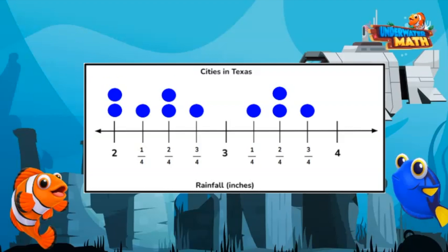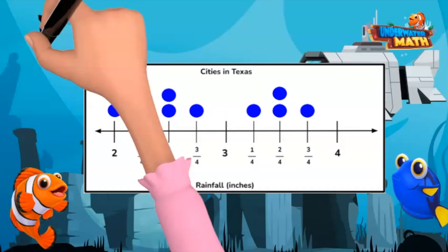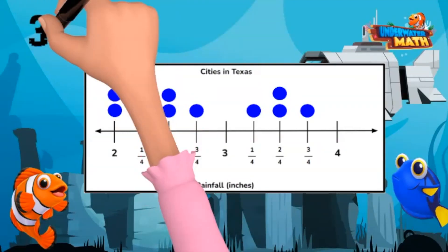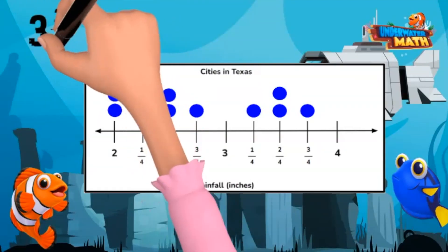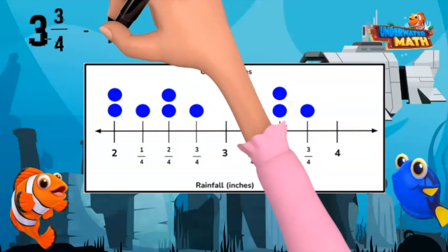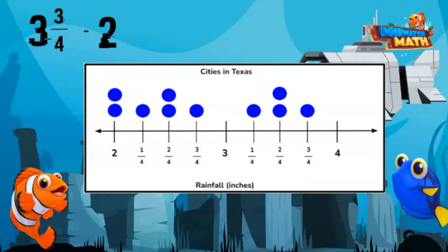Up in Texas, they don't receive much rain, do they? No, they don't. So the rainiest city received 3 and 3/4 inches of rain, and the least rainy city received 2 inches.